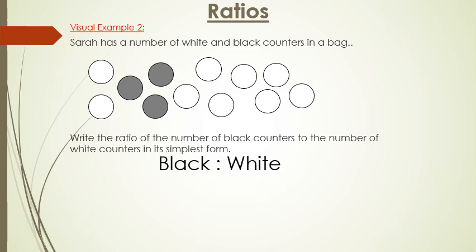So there are three black counters and nine white counters. To find this ratio in its simplest form you need to divide 3 by 3 which is 1. And you divide 9 by 3 which is 3. So it's 1 to 3.